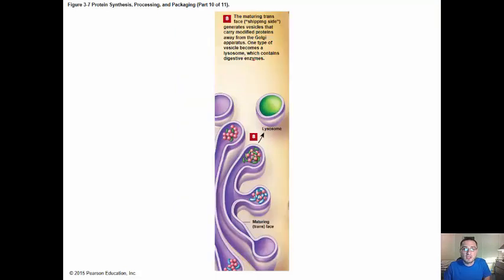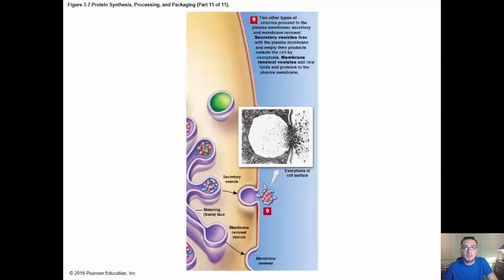The maturing trans face or the shipping side or the back end generates vesicles that carry modified proteins away from the Golgi apparatus. One type of vesicle becomes a lysosome. Those are those digestive enzymes that we talked about. Two other types of vesicles proceed to the plasma membrane: secretory and membrane renewal. Secretory vesicles fuse with the plasma membrane and empty their products outside the cell by exocytosis. Membrane renewal vesicles add new lipids and proteins to the plasma membrane. So as you're creating these proteins and they're being processed and packaged, they're then going to be used by the cell.